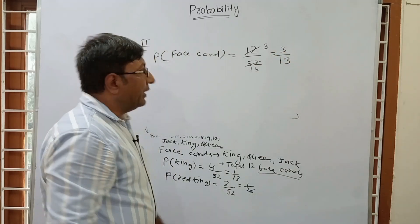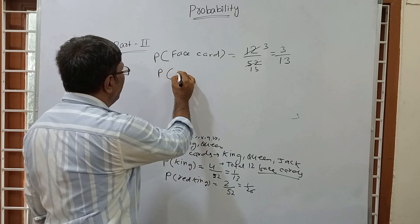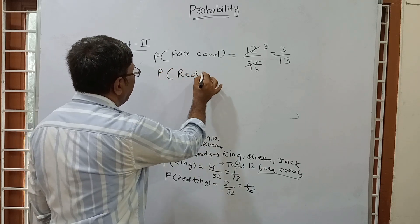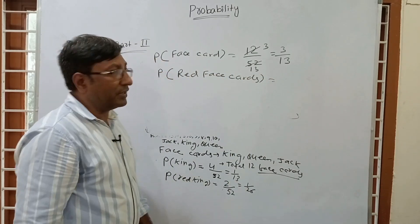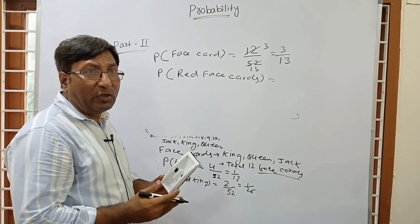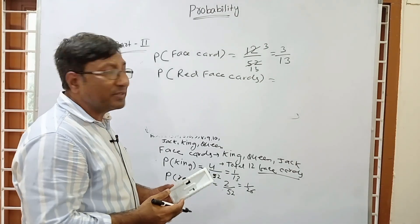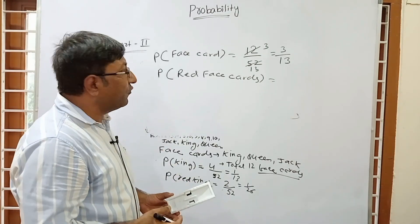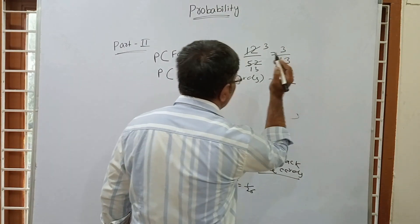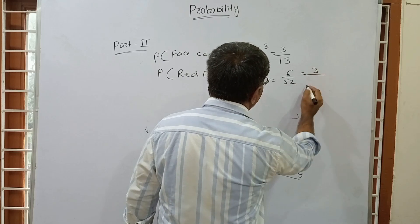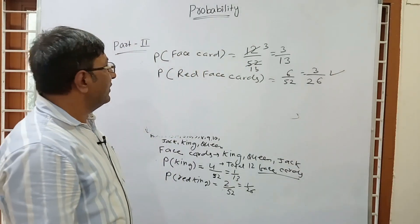Similarly, what is the probability of drawing a red face card? There are 12 face cards total, and half are red, so 6 are red face cards. Therefore probability of red face card = 6/52 = 3/26.